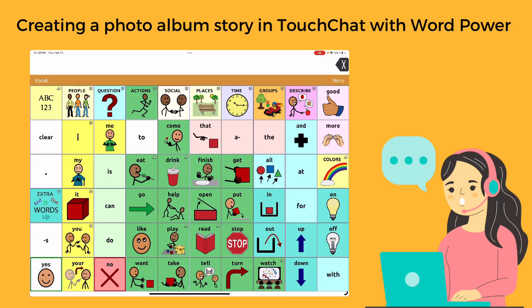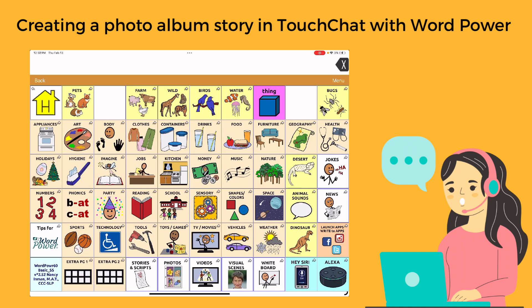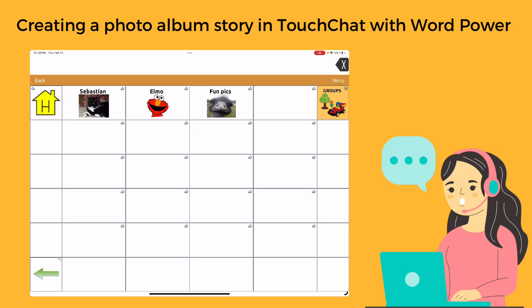So this is how you are going to set up photo albums in the Touch Chat program. You're going to go first to Groups, then down to Photos at the bottom. You're going to see you have a few sample photo albums at the top and then a bunch of other pages that are already set up for you where you can just add your own images.